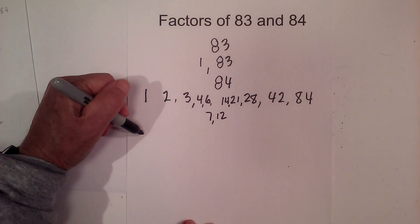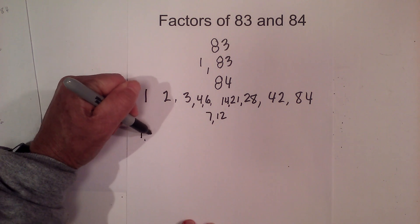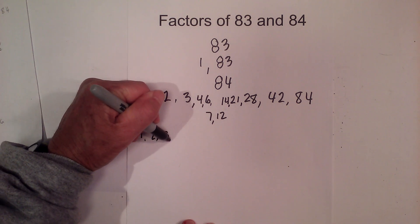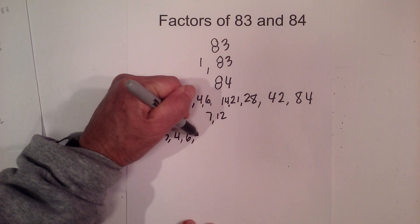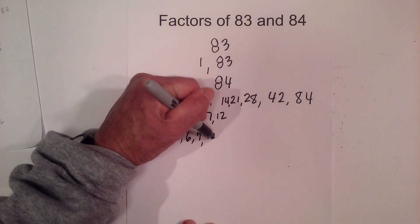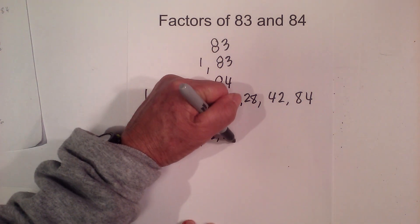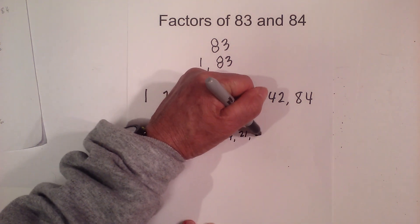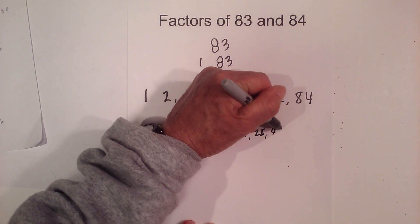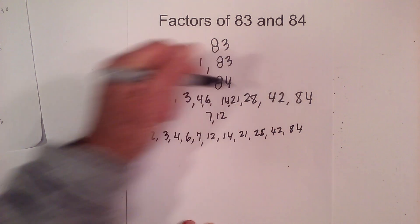So the factors are 1, 2, 3, 4, 6, 7, 12, 14, 21, 28, 42, 84.